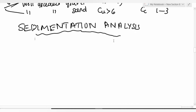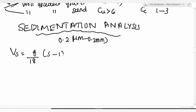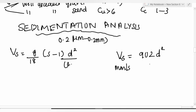Sedimentation analysis is based on Stokes' law and applies to particle sizes from 0.2 micrometers to 0.2 mm. Settling velocity = (g/18) × (S - 1) × d². Another practical relation: settling velocity ≈ 90 × d² (velocity in mm/s, d in mm).